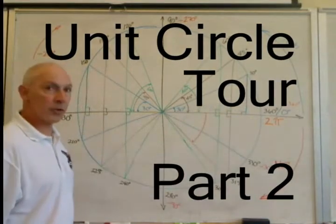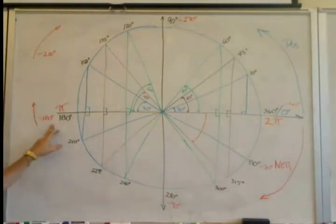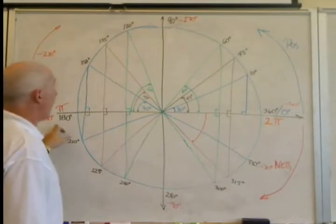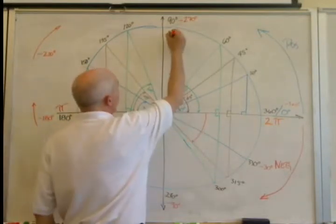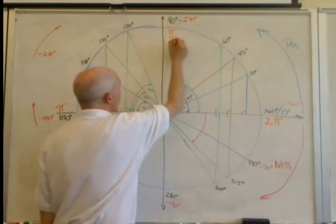As I said, all the way around is 2 pi, halfway around is pi, half of that distance would be 90 degrees, or one-half of pi, which we can write as pi over 2.